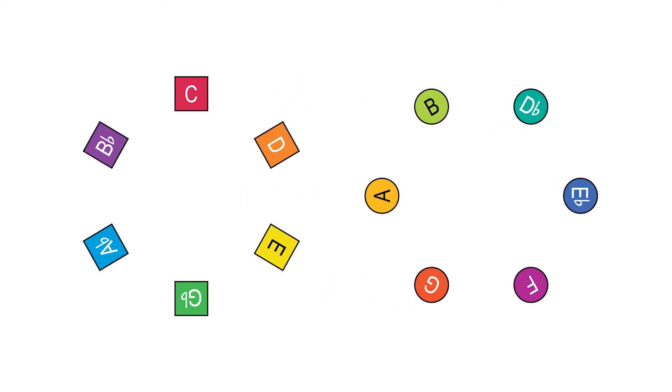Whole steps and half steps. At its most basic level, the chromatic scale is made up of just these two types of intervals.